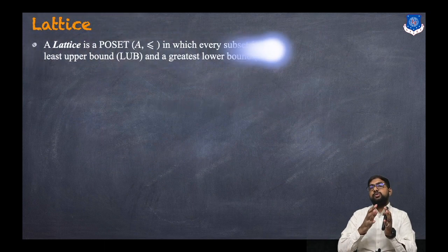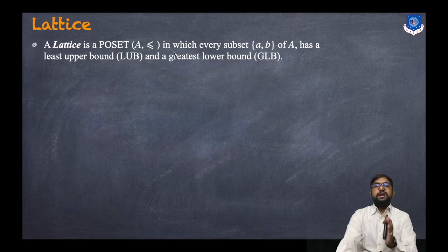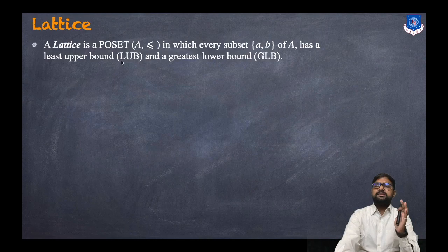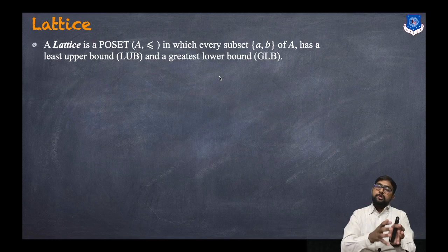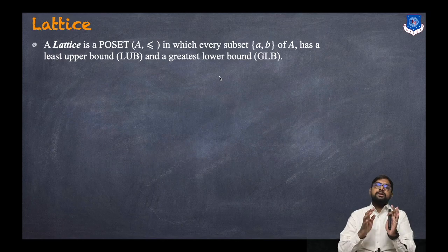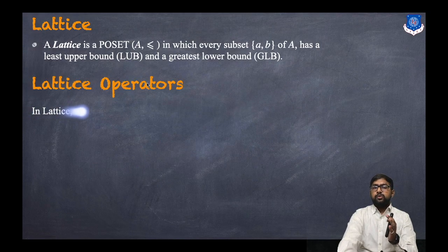The definition: a lattice is a poset (A, ≤) in which every subset {a, b} of A has a least upper bound (LUB) and a greatest lower bound (GLB). So every subset must have both a LUB and a GLB. How to find LUB and GLB we already know from previous sessions.